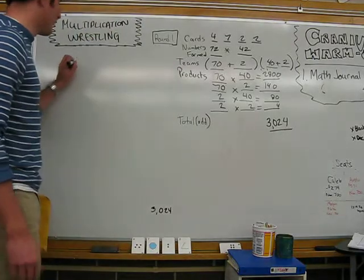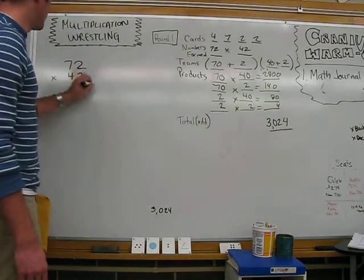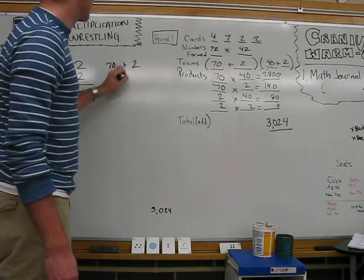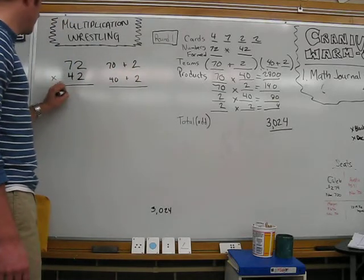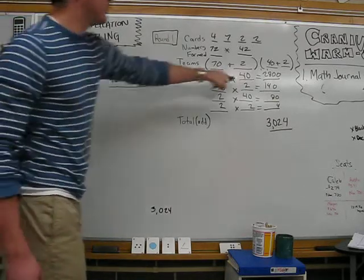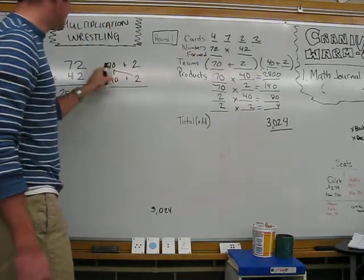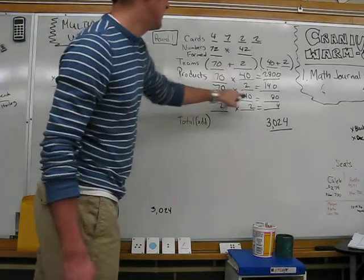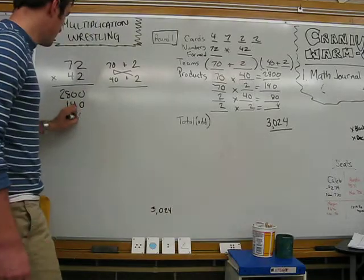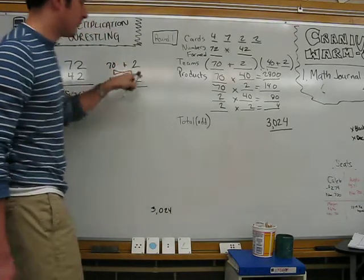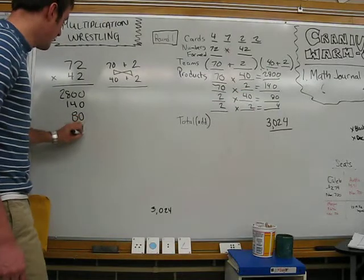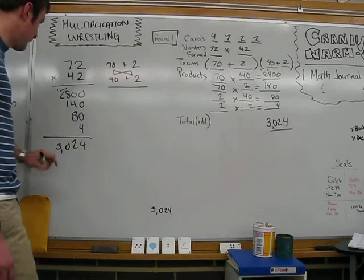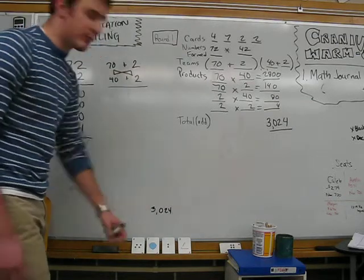Now if I go over here and do it like our partial products, we'll remember that it's the exact same, it's just set up a little bit differently. If you look for our bow tie, no problem. Seventy times forty is two thousand eight hundred, which we just did here. Seventy times two is a hundred forty, we just did that over here. Forty times two is eighty, and two times two is four. We add that up, we get four, two, zero, and three, a total of three thousand twenty-four. So player one, round one, just got those.